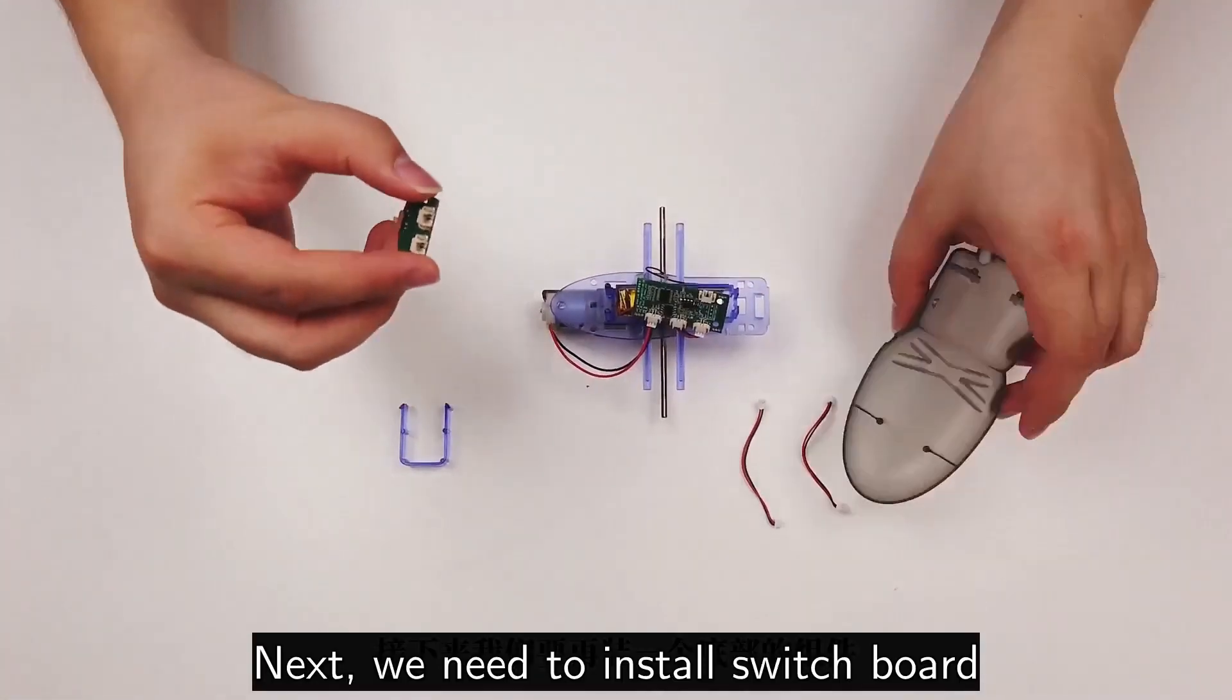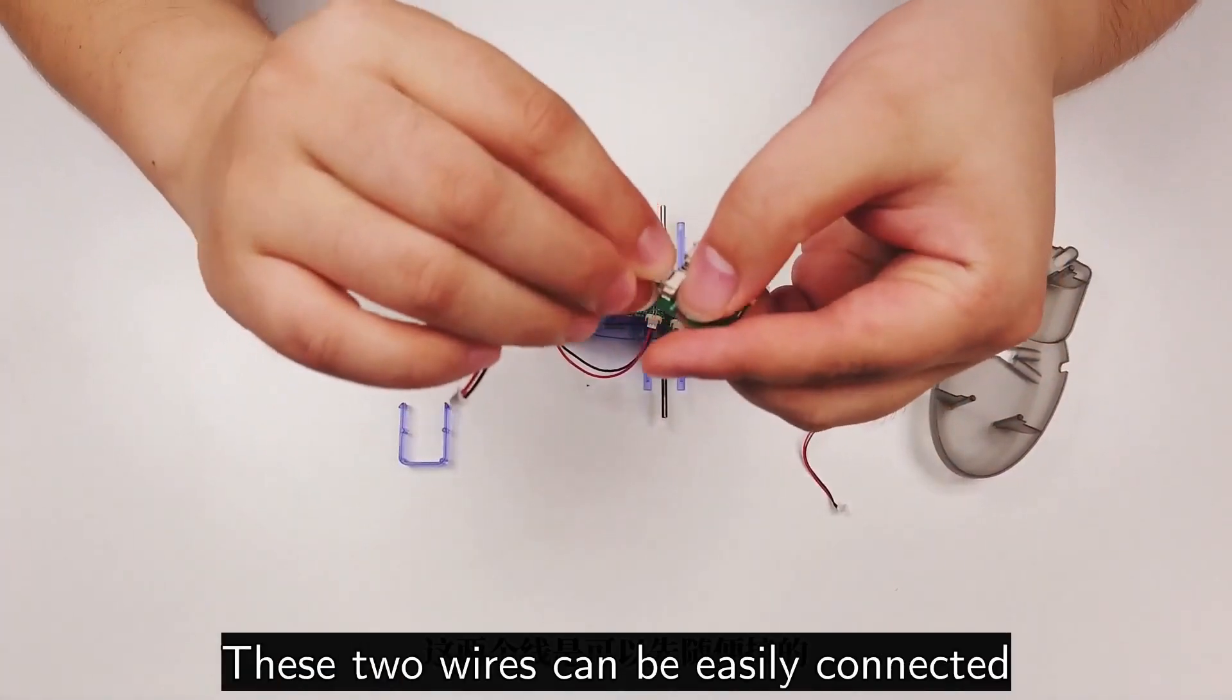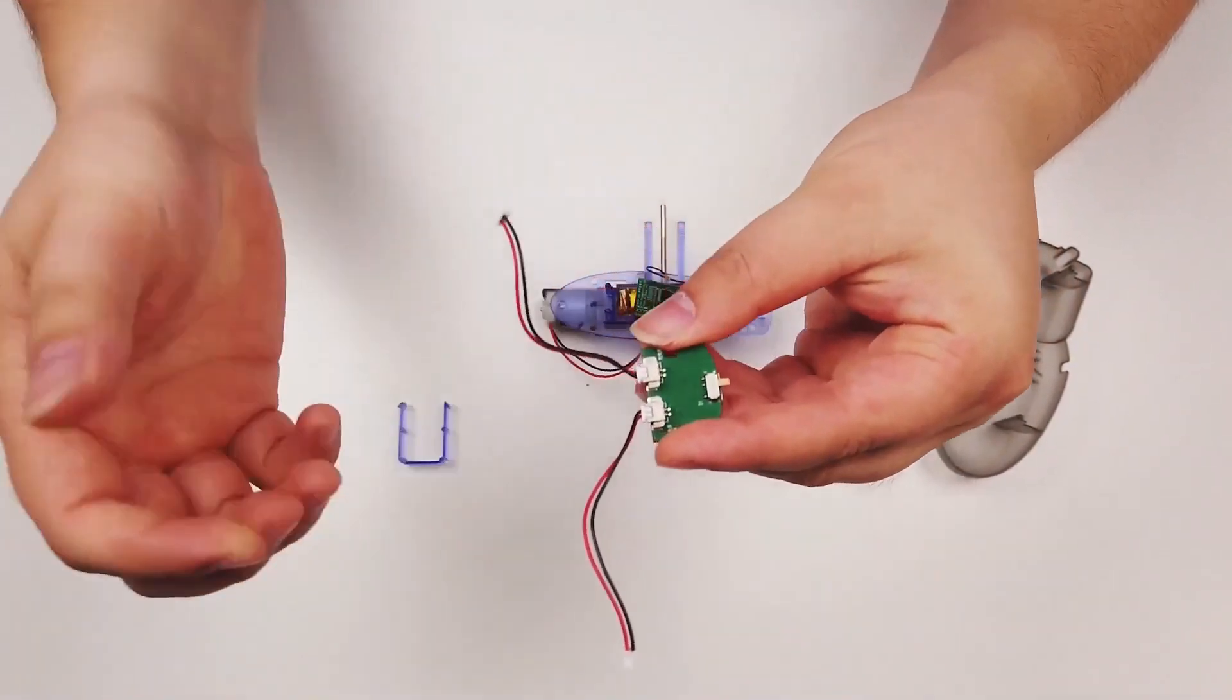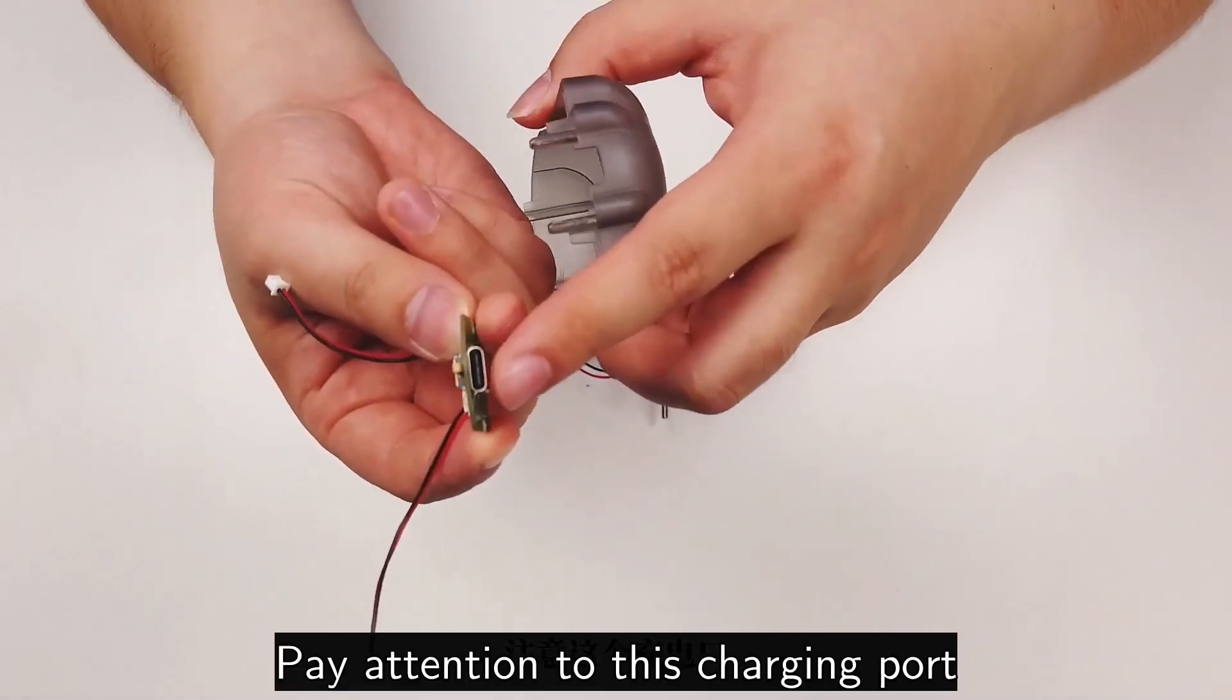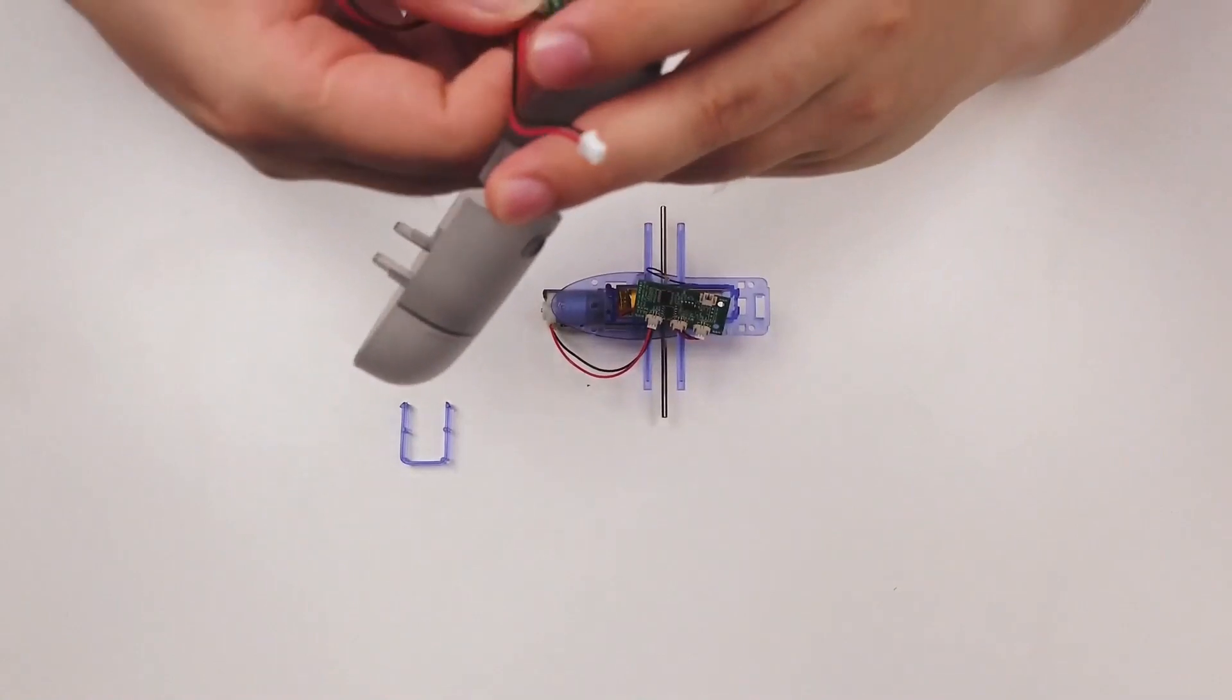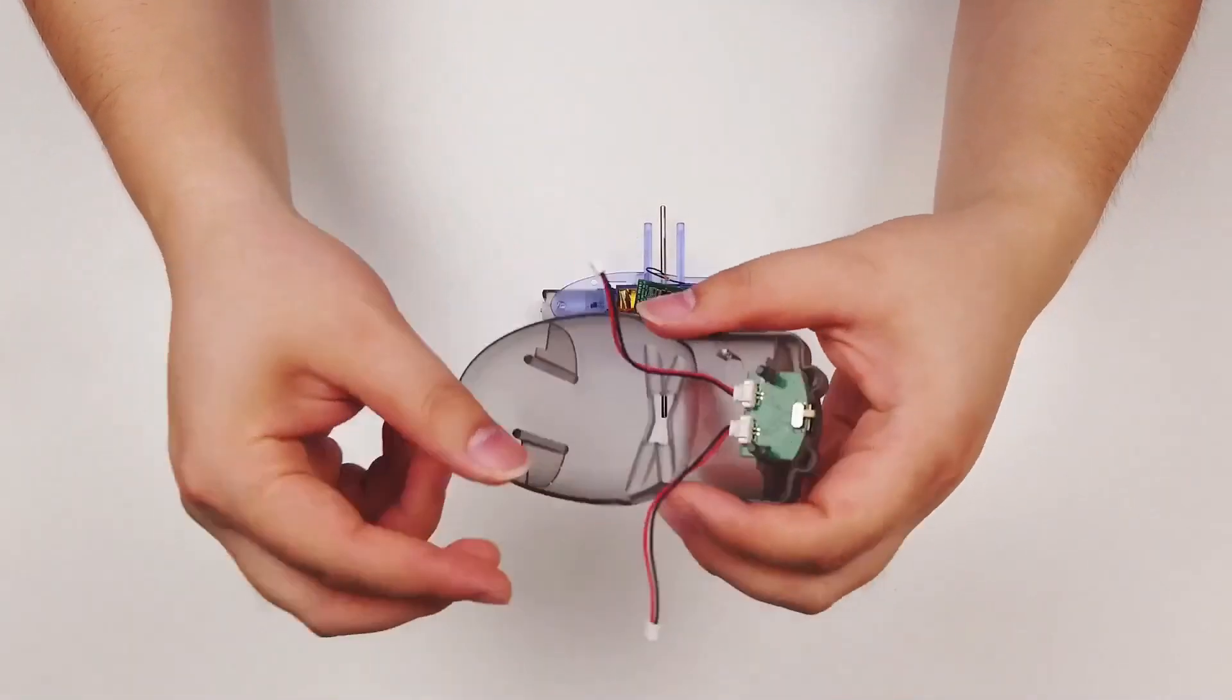Next we need to install the switchboard. Connect the two cables first. These two wires can be easily connected. Pay attention to this charging port, it's down there. Just use this slot, get it stuck. This is how it is installed in place.